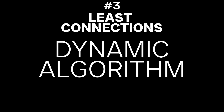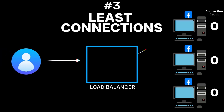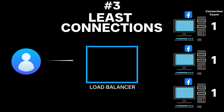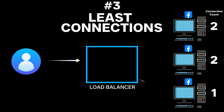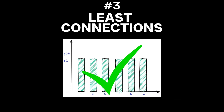Our last algorithm is called Least Connections, and it's what's called a dynamic algorithm — dynamic in the sense that it intelligently determines which server to forward requests to based on how busy each server is. It does this by keeping tabs on how many open connections each server has to client machines. When a new request comes in, it picks the server with the least number of connections. This approach ensures that requests are sent to machines that are the least busy, and that no one server gets too overwhelmed.